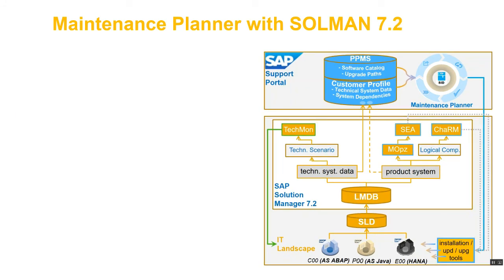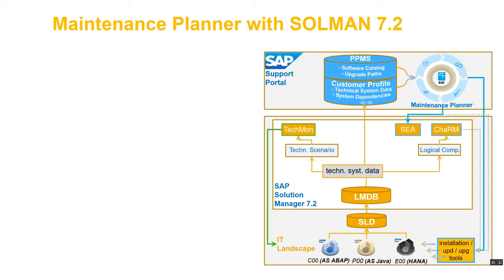With Solution Manager 7.2, product system data is no longer required and LMDB will be discontinued, so there is no option apart from using Maintenance Planner. Technical system data will be used to create logical components for ChaRM as well as technical scenarios for technical monitoring, and Scope and Effort Analyzer will start using Maintenance Planner transactions instead of Maintenance Optimizer.